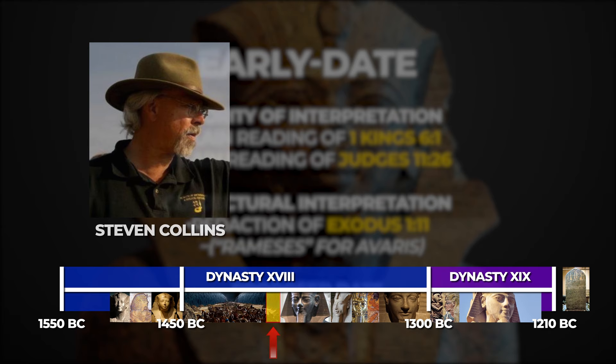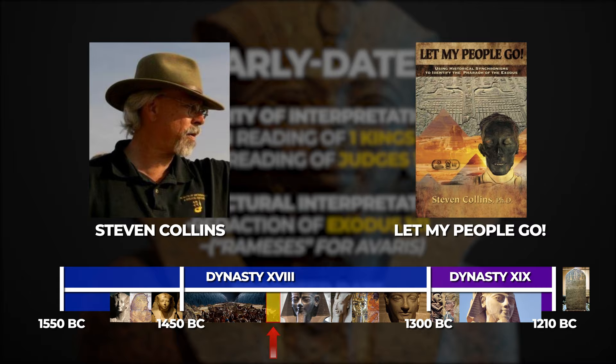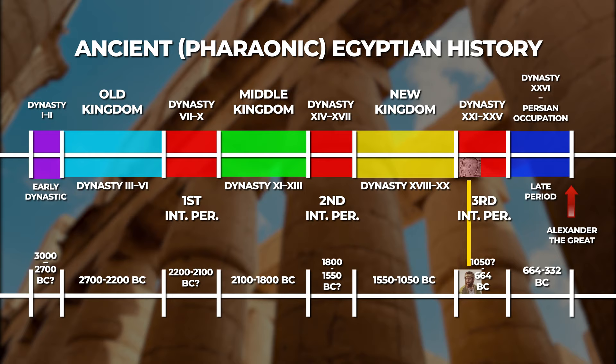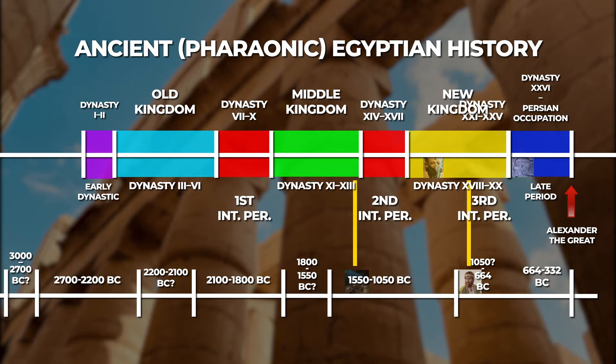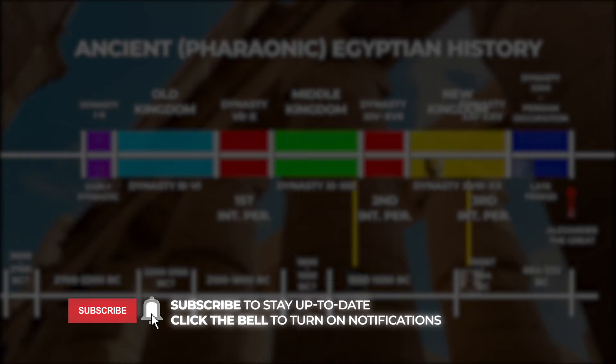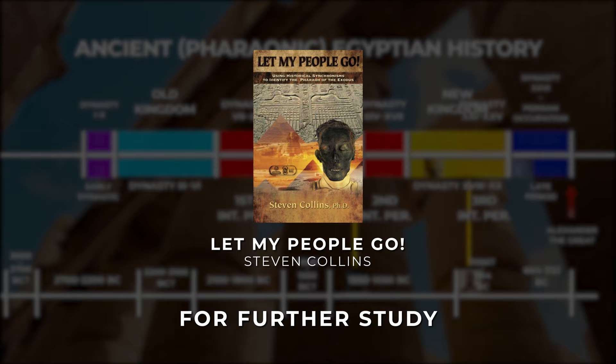This is the theory put forth by Stephen Collins in his book Let My People Go. In the last few years, however, there has been a popular documentary release called Patterns of Evidence, which proposes another theory that we have yet to explore – that the early date of the Exodus of around 1450–1400 BC coincides not with ancient Egypt's 18th dynasty, but rather with the Middle Kingdom. We will examine the strengths and weaknesses of assigning a Middle Kingdom date for the Exodus, rather than an 18th dynasty date, in the next video. Please subscribe and click the notification bell so that you will be notified when I release the upcoming videos in this series. For further reading on this subject, I recommend Let My People Go by Stephen Collins – you will find a link to this book in the description.